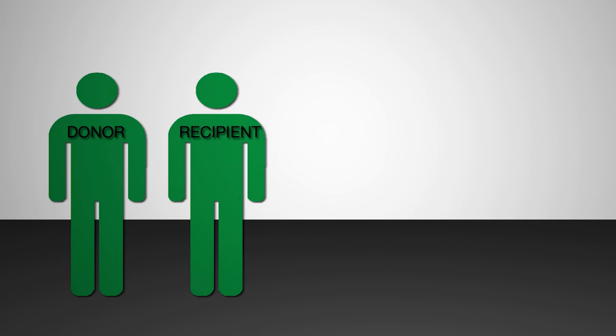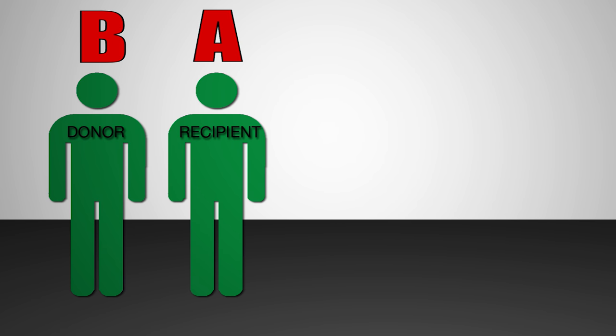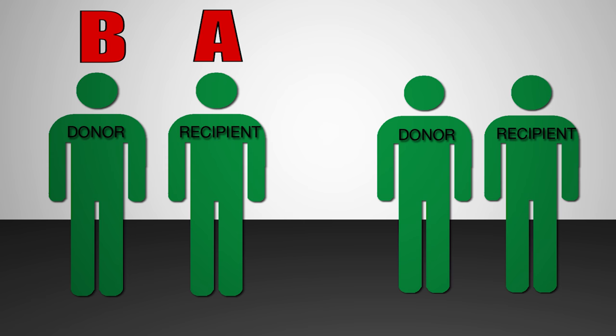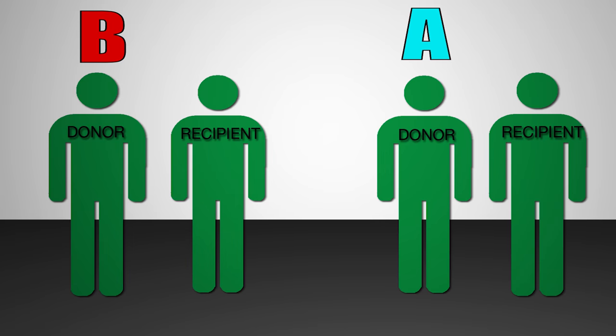For example, if we have a pair where the donor is blood type B and the recipient is blood type A, they can't donate to each other because of blood type. We go into our pool and identify another pair where the donor is blood type A and the recipient is blood type B, and we swap. The B donor donates to the B recipient and the A donor donates to the A recipient. Two people get transplanted and they both get living donors. That's the basic setup for a paired exchange.